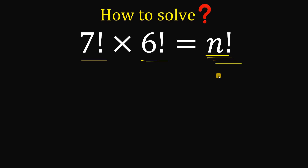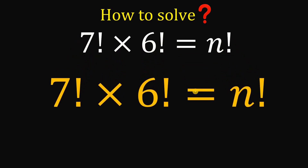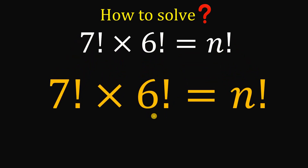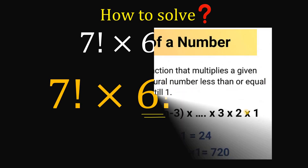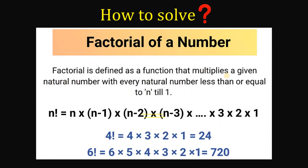To answer this question, let's get the equation. The first question is: what do we mean by factorial — or 6 factorial or n factorial? Factorial is defined as a function that multiplies a given natural number with every natural number less than or equal to n, down to 1. So n factorial equals n × (n−1) × (n−2) × (n−3) × … × 3 × 2 × 1.